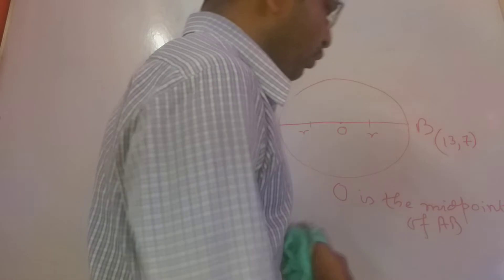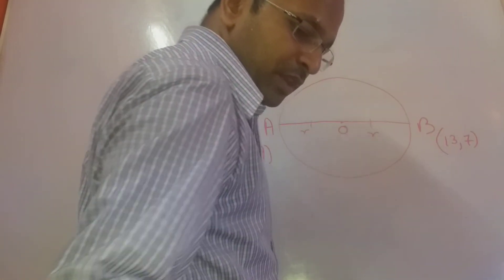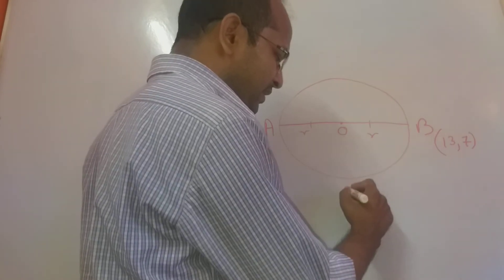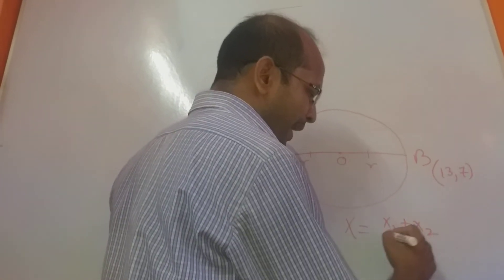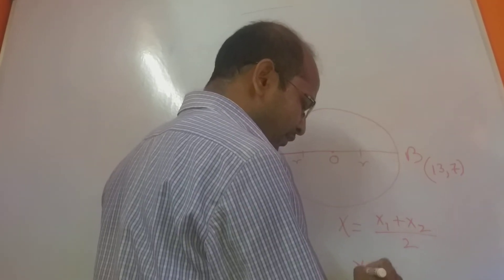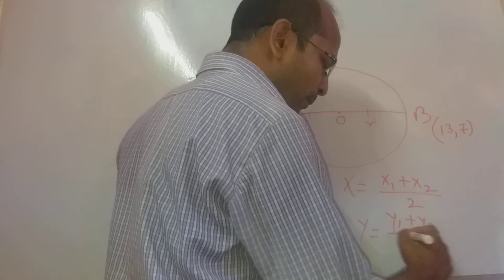We know the formula of midpoint. The formula is very easy. If you have to find the coordinate X, then it is X1 plus X2 by 2. And if you want to find Y, then it will be Y1 plus Y2 by 2.